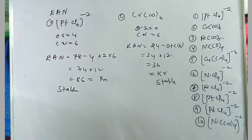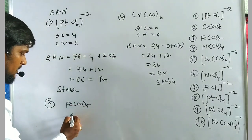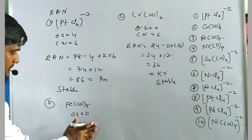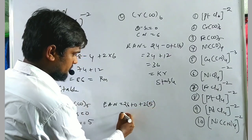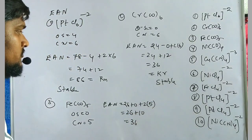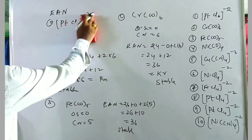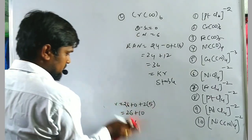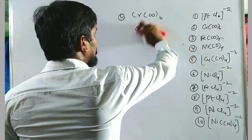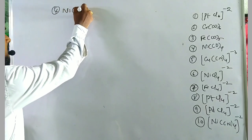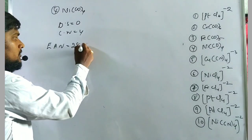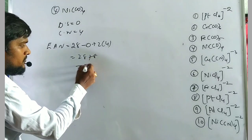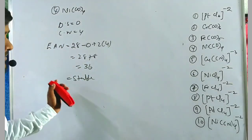Exercise example 3: [Fe(CO)5]. Oxidation state = 0, coordination number = 5. EAN = 26 − 0 + (2 × 5) = 26 + 10 = 36. Stable. Exercise example 4: [Ni(CO)4]. Oxidation state = 0, coordination number = 4. EAN = 28 − 0 + (2 × 4) = 28 + 8 = 36, which equals krypton. This complex is also stable — 36 is the krypton configuration.